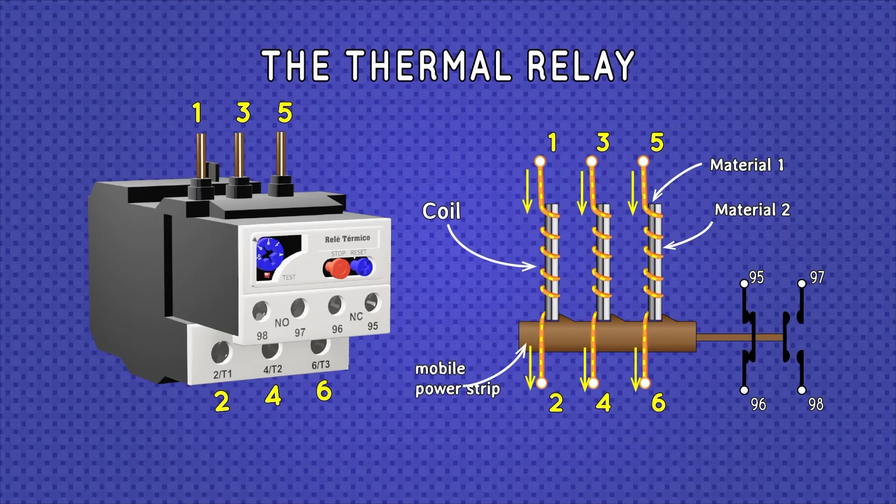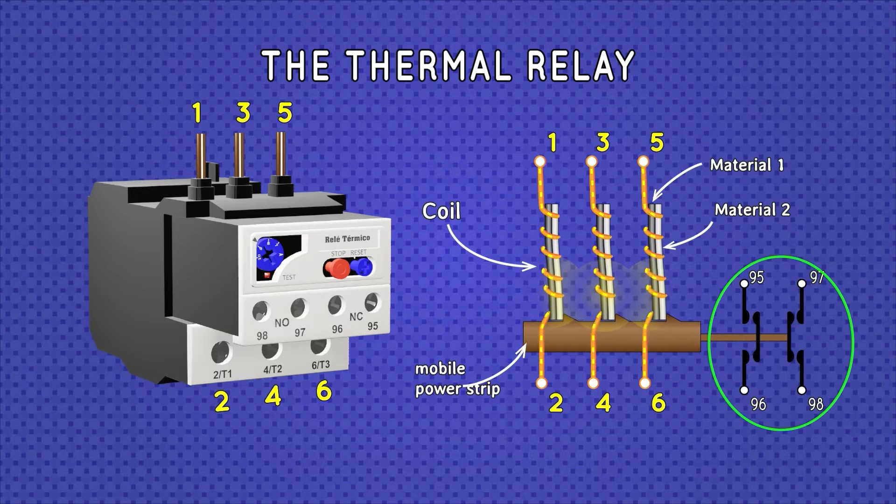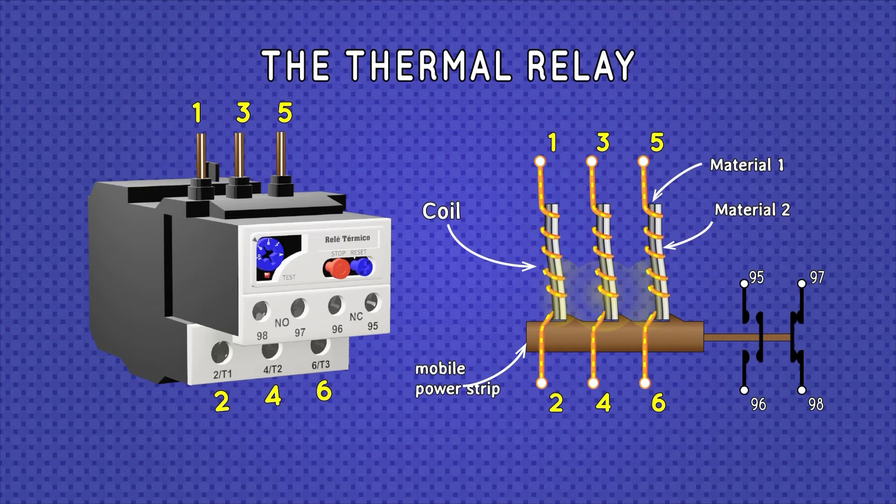By circulating current through each coil, the bimetals constantly monitor the current absorbed by the motor. If the current that circulates is higher than the adjusted one, then the bimetals heat up and deform, allowing the mobile strip to move and push the auxiliary contacts, causing them to change position and state.